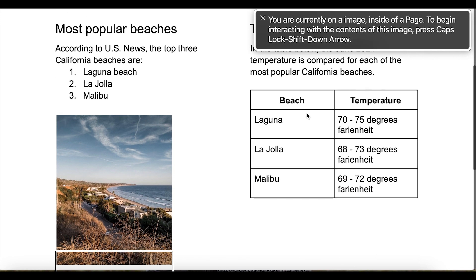The image didn't have alternative text and the reading order seems to be wrong. This PDF has two columns, so I should navigate through one column and then to the next. Instead, it is just going left to right across the columns.